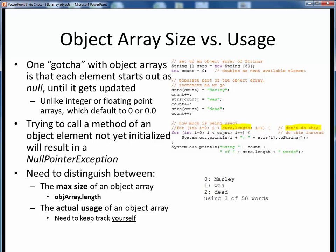Then if we wanted to display all the elements so far of our string array, this first commented out loop statement is what we would not want to do. We don't want to simply loop over the full length of the array because only the first three elements contain legitimate string references, and the last 47 still contain null values.